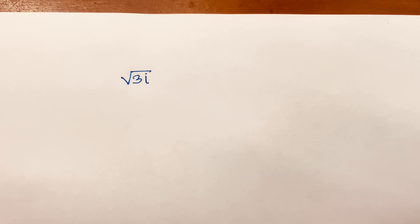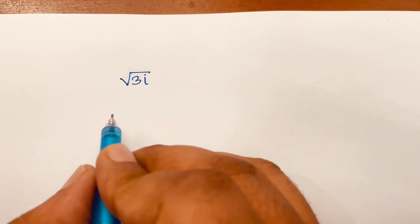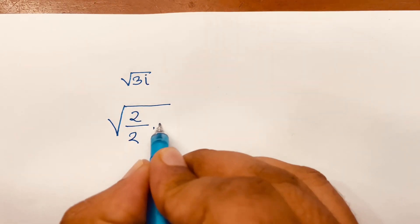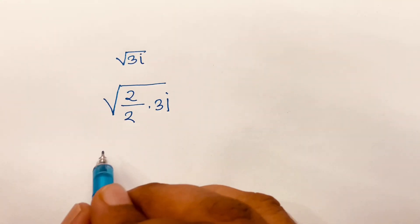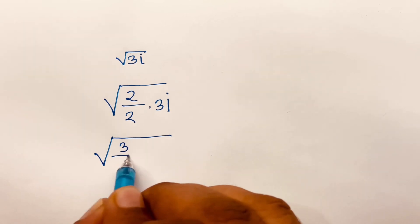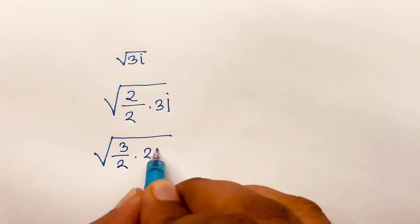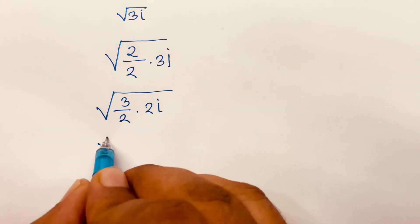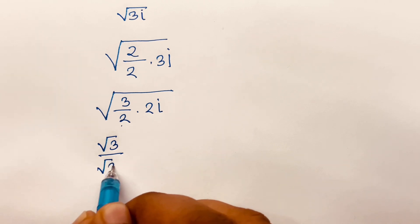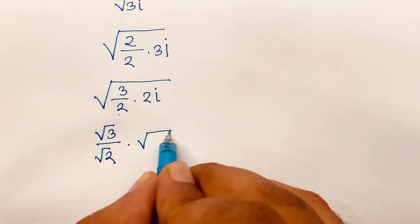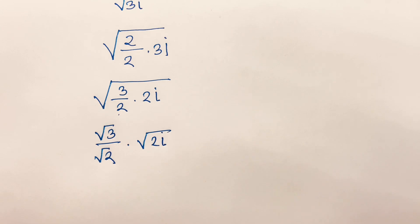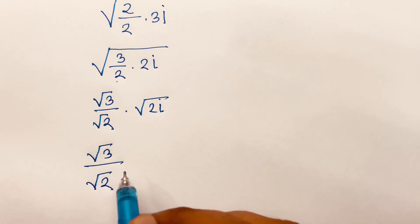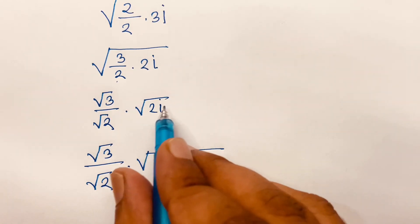Hello everyone. How to solve square root of 3i. First, I can say it will be square root of 2 over 2 times 3i, then it will be square root of 3 over 2 times 2i. Then I just move on 3 and 2, so it will be square root of 3 over square root 2 times square root 2i.